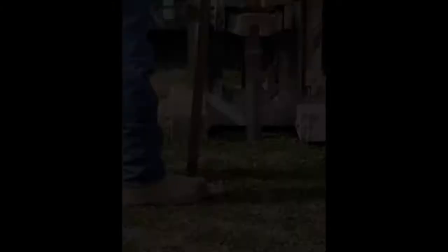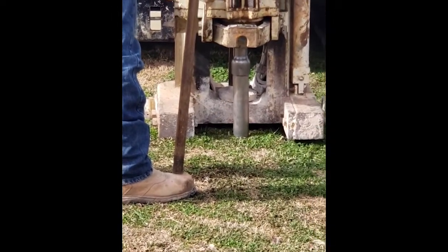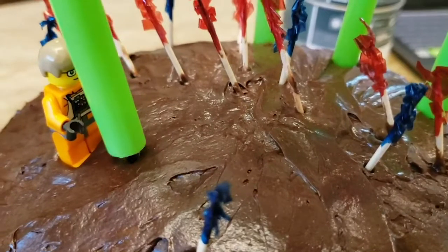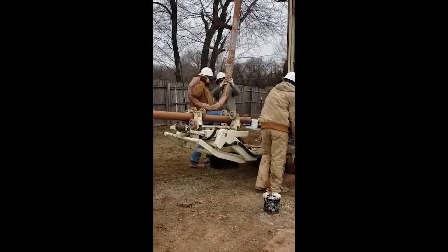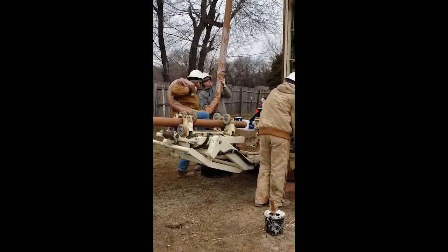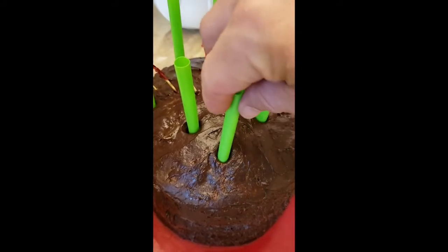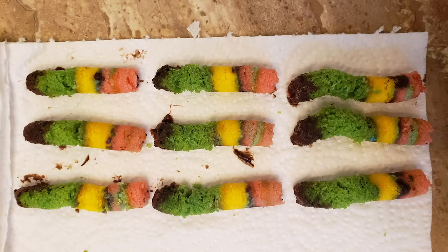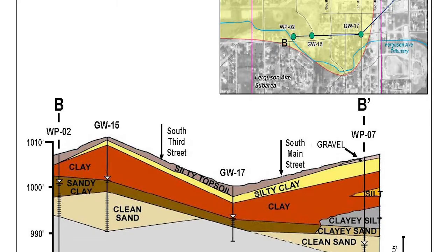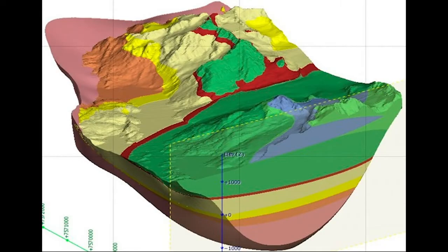Bring the drilling equipment. We now have our core samples laid out in front of us. Now we describe the core samples we extracted from the Earth. We usually use a computer to help show a detailed picture of our description. This way, we can see a 3D model of what the ground looks like beneath us.